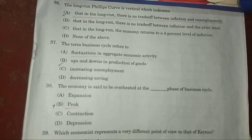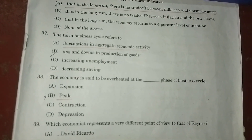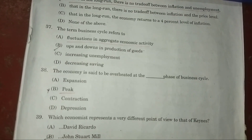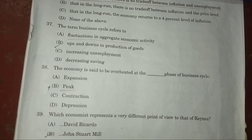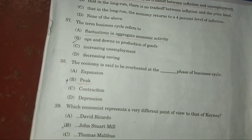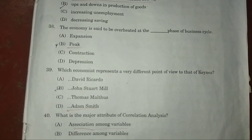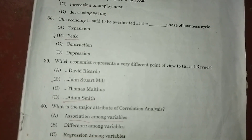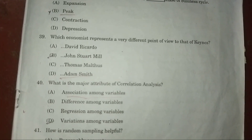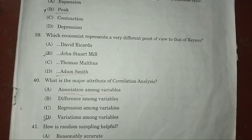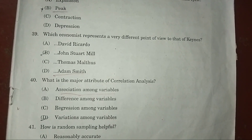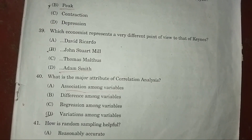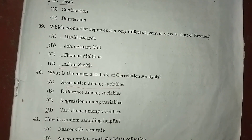Question 37: The term 'business cycle' refers to fluctuations in aggregate economic activity — answer: A. Question 38: An economy is said to be in the peak phase of a business cycle — answer: B. Question 39: Which economist represents a different point of view to Keynes? Answer: D — Adam Smith.